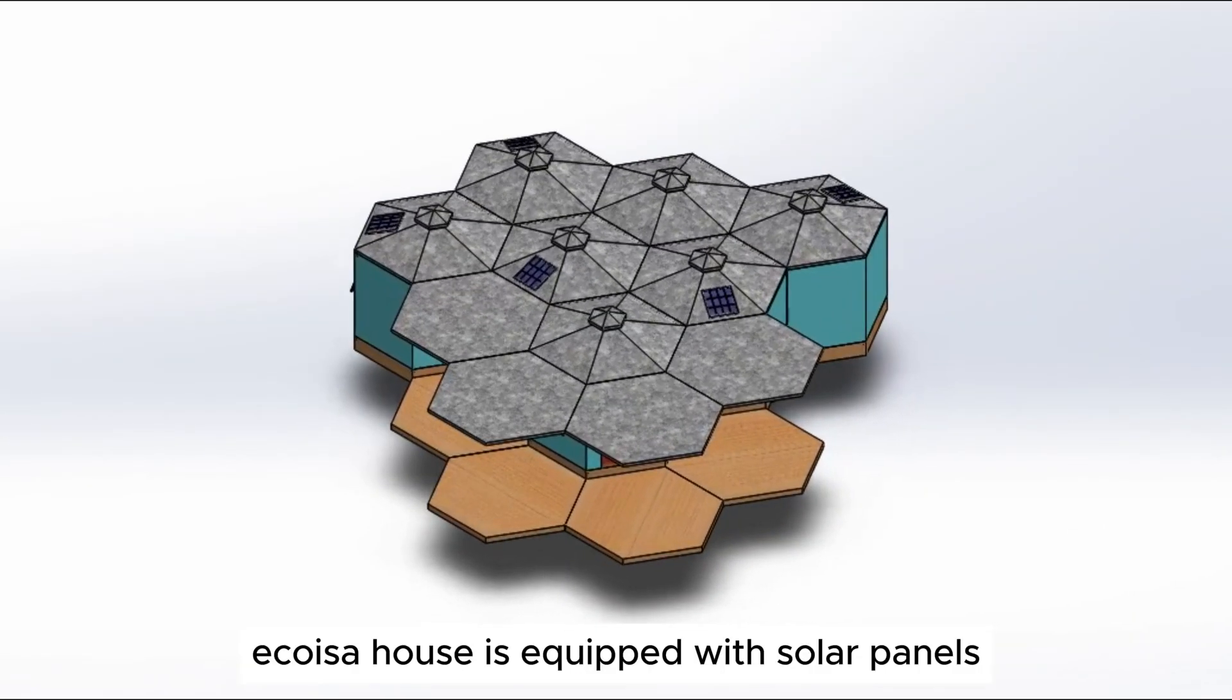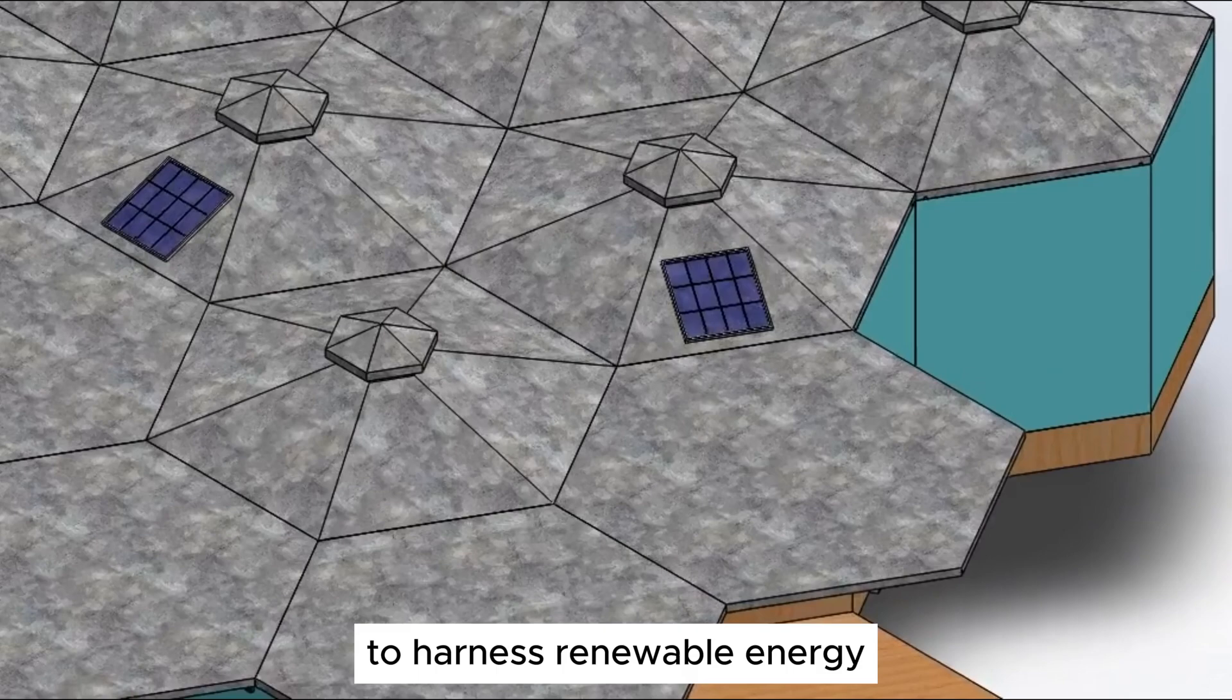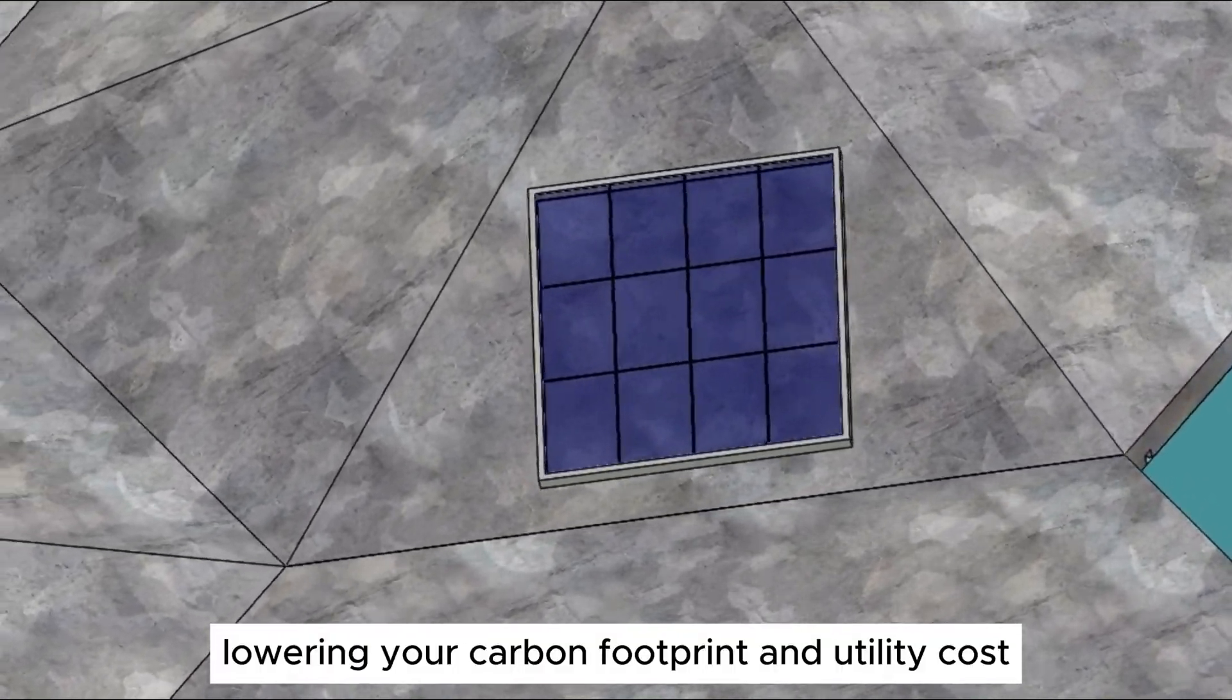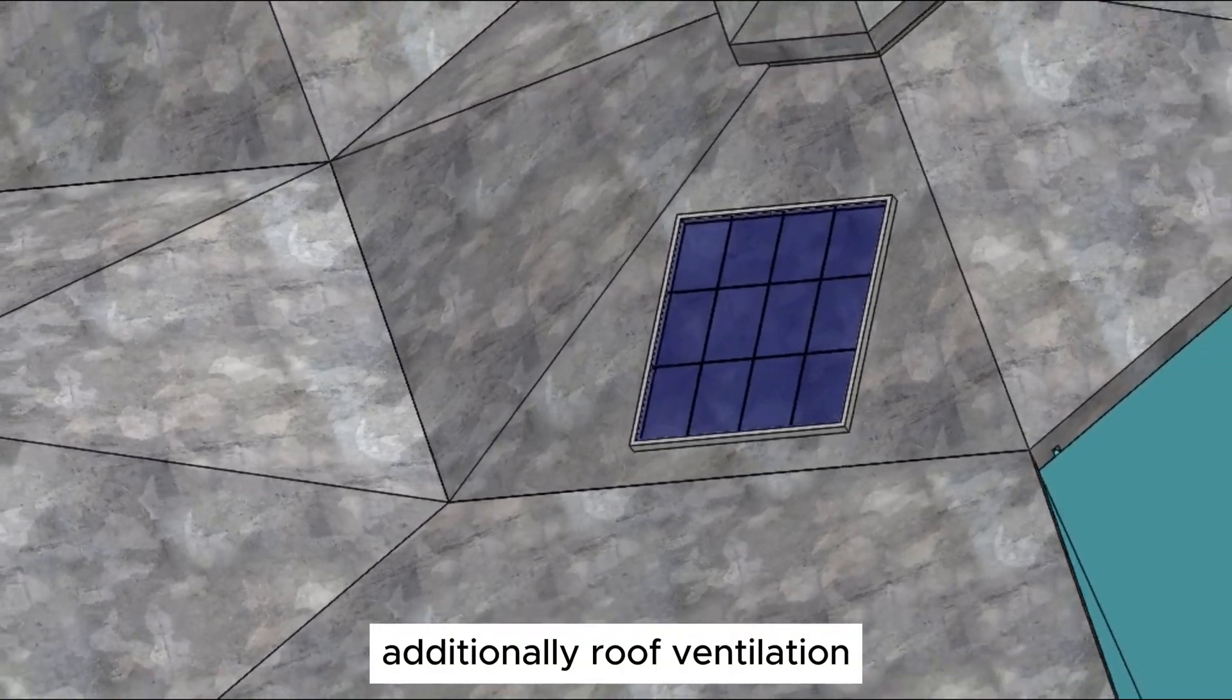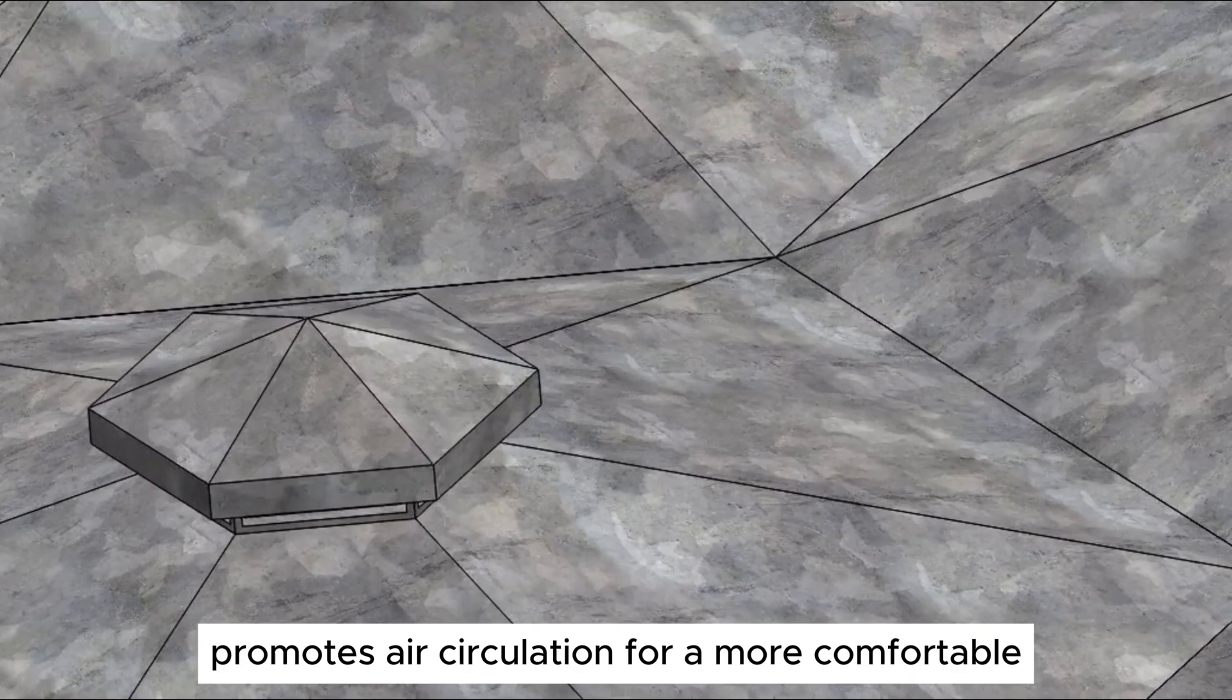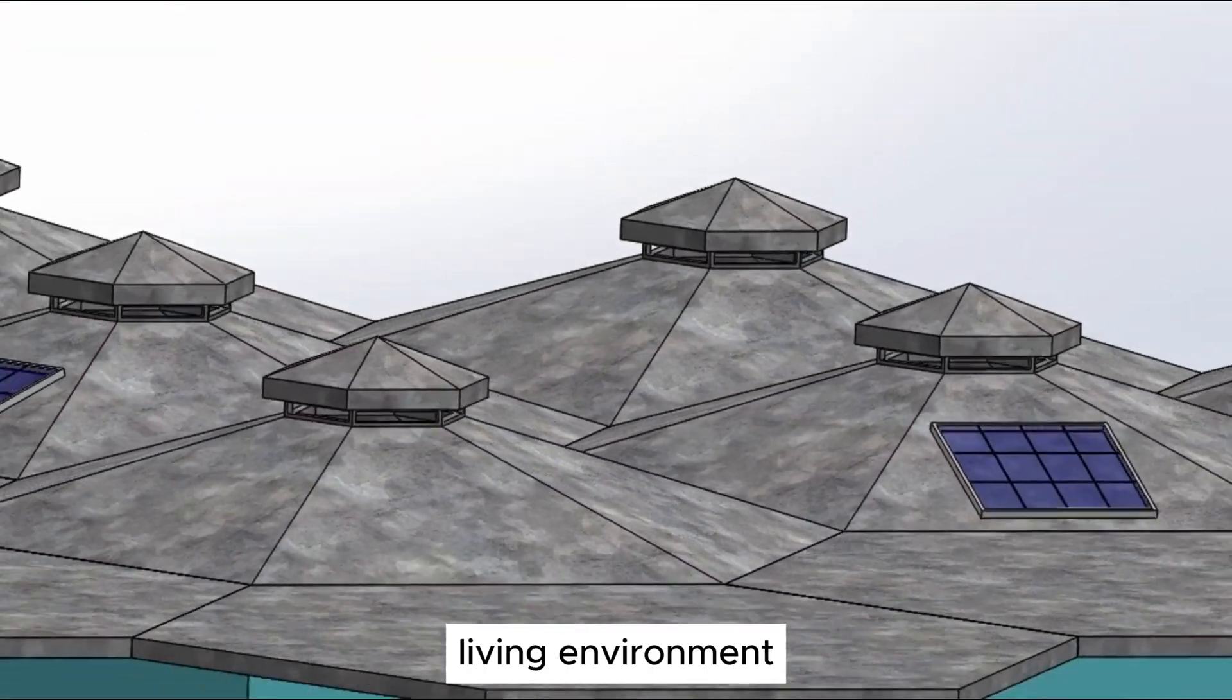EcoXA House is equipped with solar panels to harness renewable energy, lowering your carbon footprint and utility costs. Additionally, roof ventilation promotes air circulation for a more comfortable living environment.